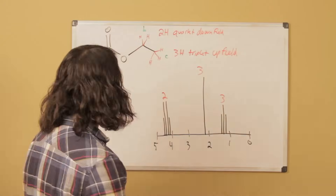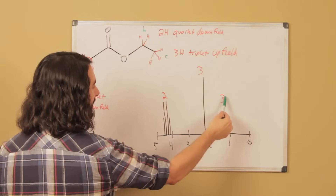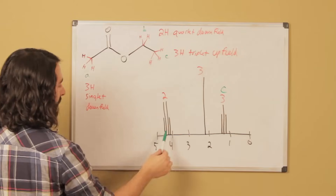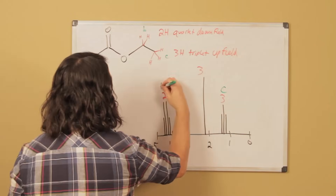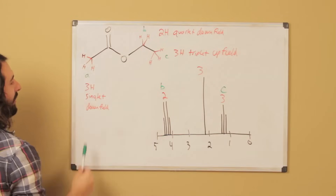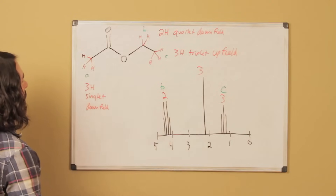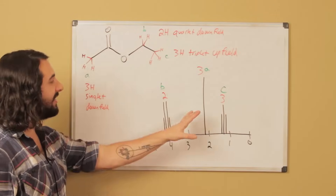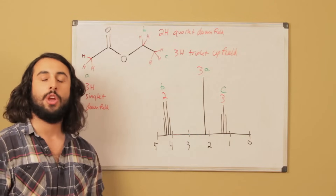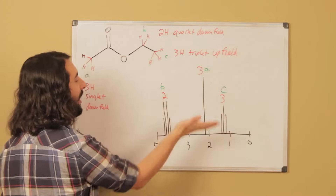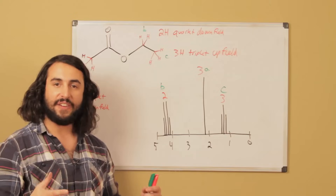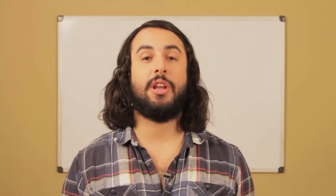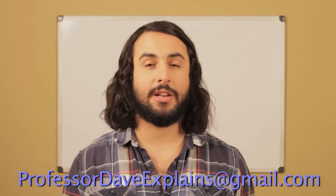Now the assignment is straightforward. A 3H triplet that is upfield — that's integrated to three, is a triplet, and is upfield — is certainly resonance C. A 2H quartet that is downfield — integrated to two, a quartet, downfield — that's got to be B. And then A, a 3H singlet in the middle, is peak A. To summarize: when assigning resonances to protons, we look at chemical shift, integration, and splitting. Thanks for watching — subscribe to my channel for more tutorials, and feel free to email me at professordaveexplains@gmail.com.